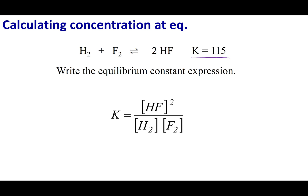What you should have done is products over reactants raised to the stoichiometric coefficients. So in this case, that's HF squared divided by H2 times F2.